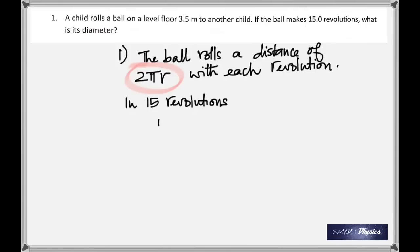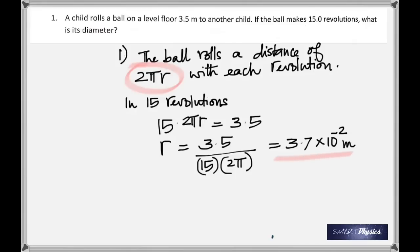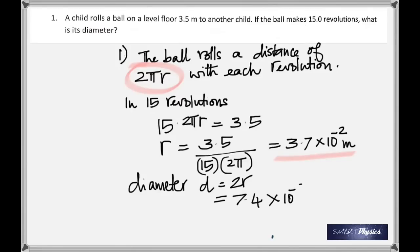Since it makes 15 revolutions, it moves through a total distance of 15 times 2πr, which should equal 3.5. Rearranging to find the radius, we get 3.7 × 10⁻² meters. The diameter is twice that: 7.4 × 10⁻² meters.